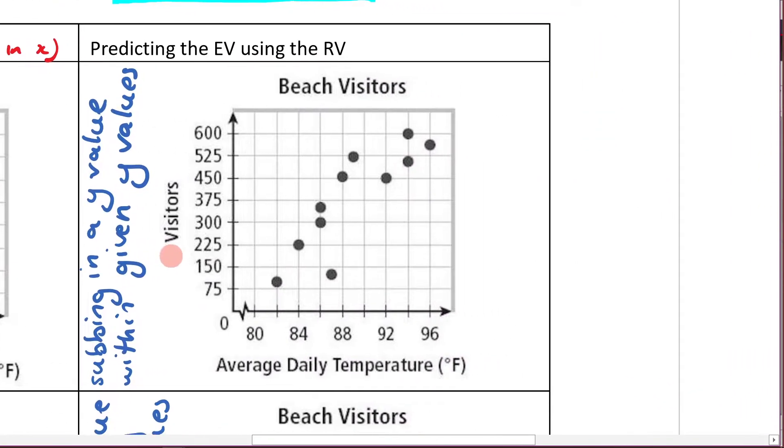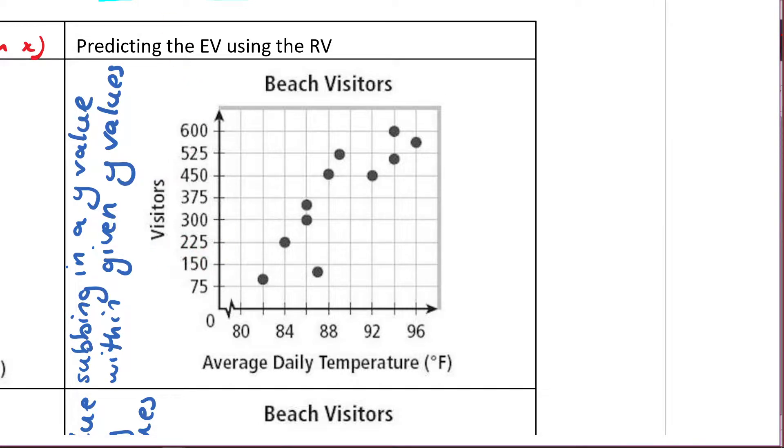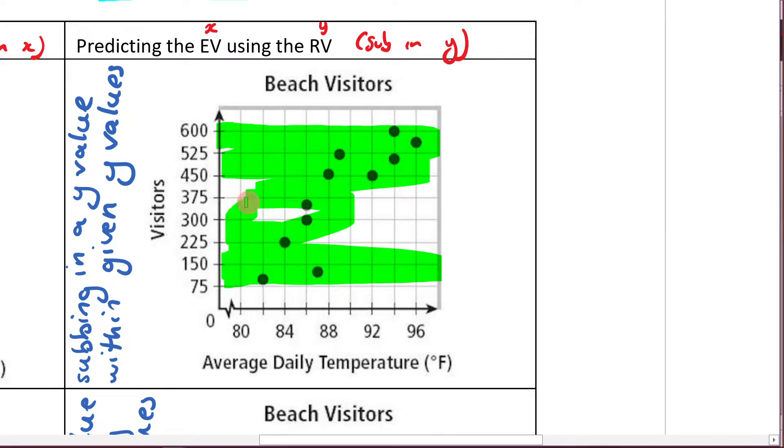All right, let's now move over here, in which this time what we're doing is it's still interpolation. But now we're predicting the explanatory variable, which is our x, using the response variable, which is our y. So this time we're subbing in a y. Because it's interpolation, you can copy down what I've written here. We're subbing in a y value within the given y values. So that means we're considering only values within the y. So it's like this. We're not going outside of that.